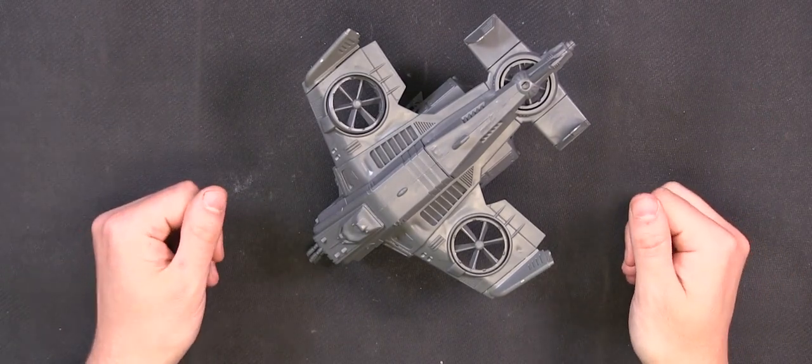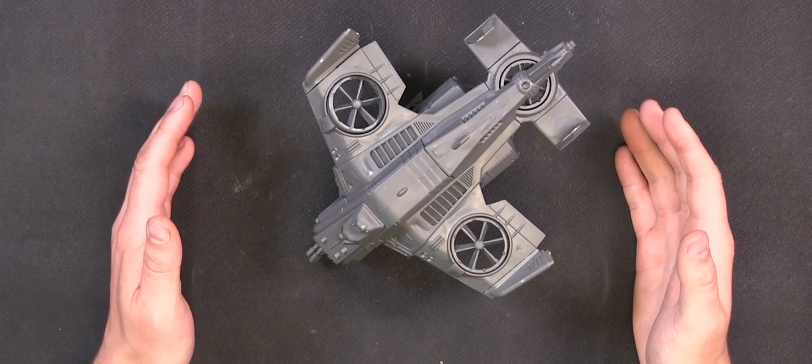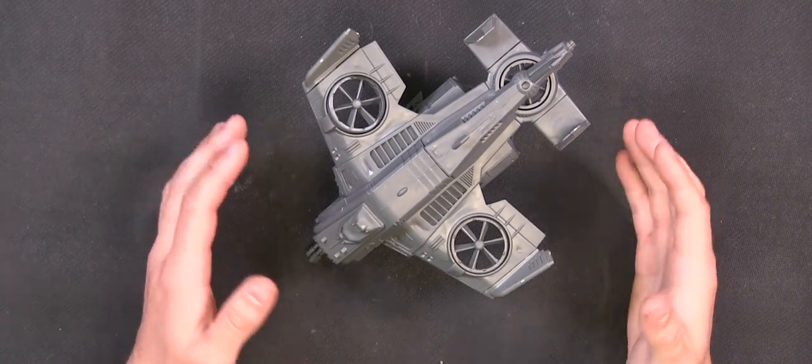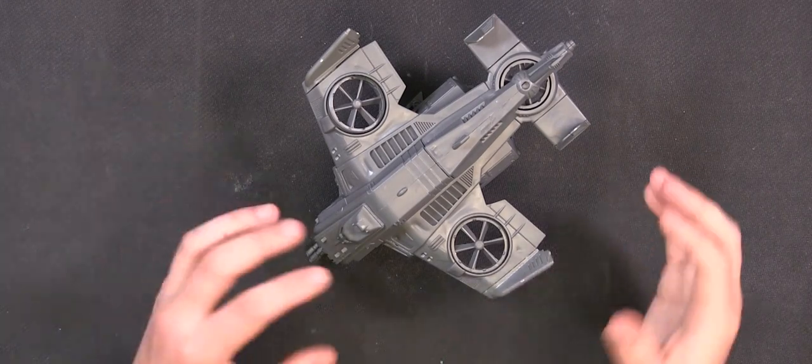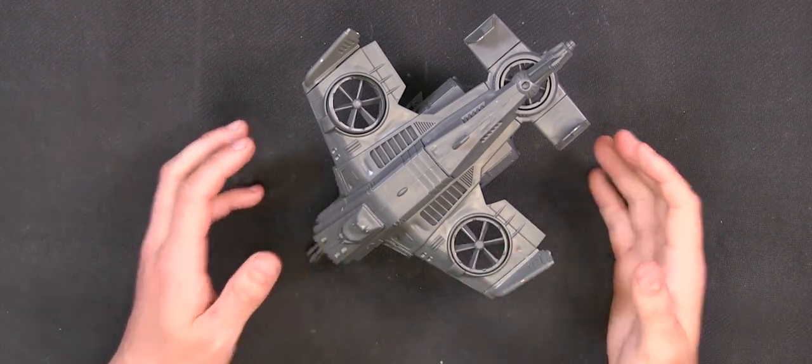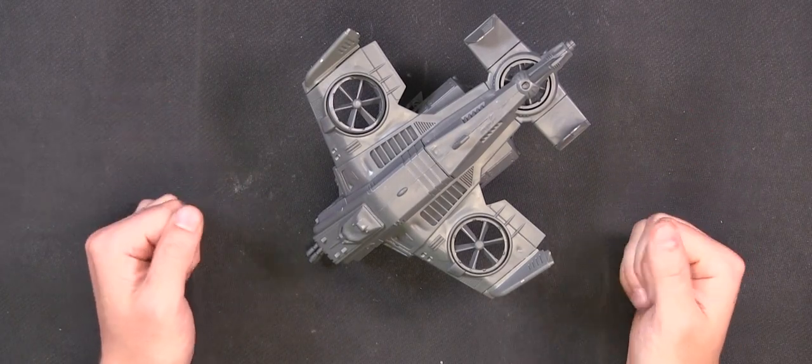There we have it, that is the GCPS Hornet built. The Plague Hornet kit is the same build but you have plague looking sections that you put in instead of the GCPS ones and you have additional things that you add on extra. Hope you enjoyed that, I'll see you again soon.